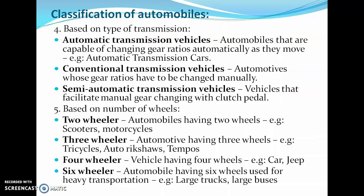The next classification is based on Type of Transmission. Automatic Transmission Vehicles are automobiles capable of changing gear ratios automatically as they move, with no need to change gears manually. Conventional Transmission Vehicles require gear ratios to be changed manually through manual intervention. Semi-Automatic Transmission Vehicles facilitate manual gear changing with a clutch paddle.